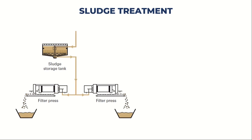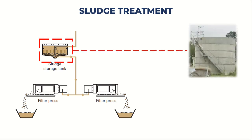Sludge treatment is the process of managing and handling the residual sludge that accumulates during wastewater treatment. It involves various techniques and equipment to reduce the volume, stabilize the sludge, and potentially transform it into useful byproducts. First, we have the sludge storage tank — a large tank designed to store excess sludge temporarily. It allows for settling and separation of any remaining water from the sludge, which helps to further concentrate the solids before further treatment.